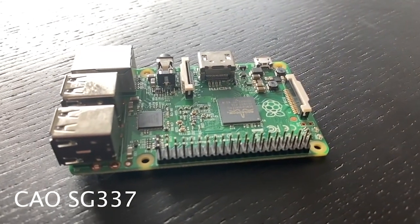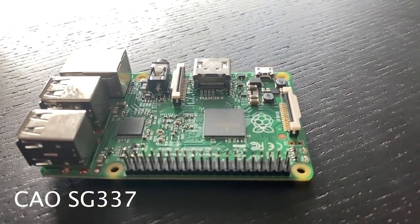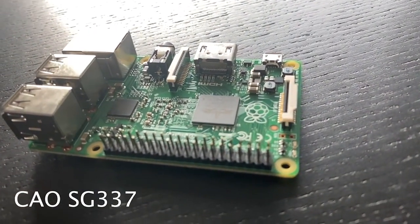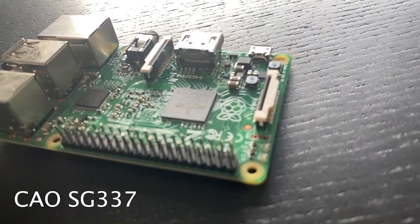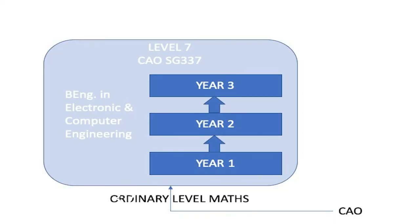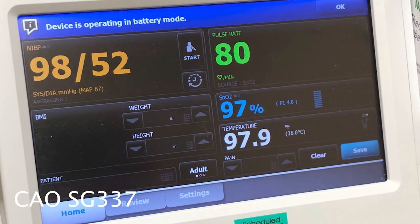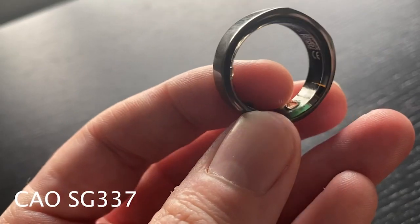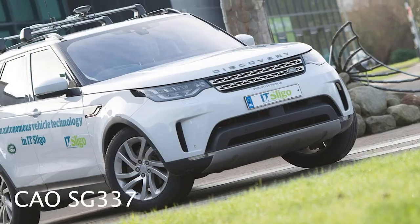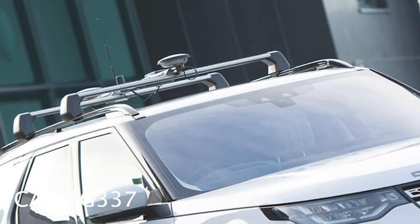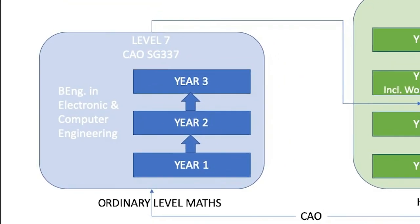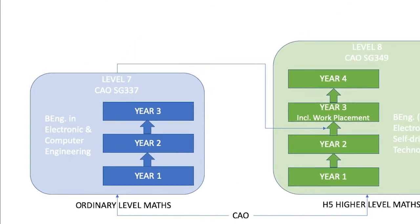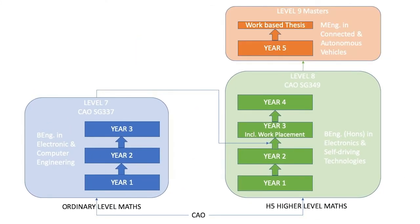If you are interested in technology or engineering, but are not doing higher level maths, why not consider our level 7 in electronic and computer engineering? This is a three-year program that looks at the design and development of embedded electronic systems. These are the medical devices that keeps us healthy, the consumer devices that keeps us entertained, or the controlled systems that keeps us safe on the road. You can then progress onto the level 8 in electronics and self-driving technologies and from there to the masters. Check out the link below for more information.